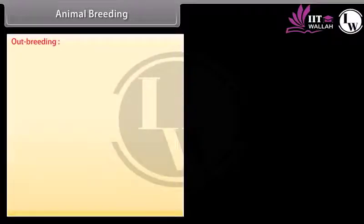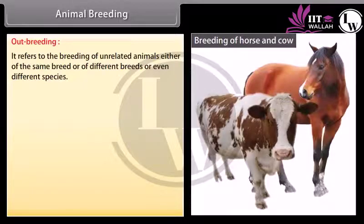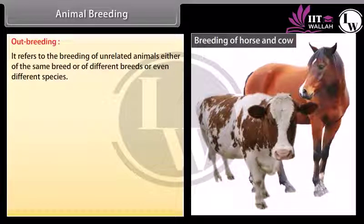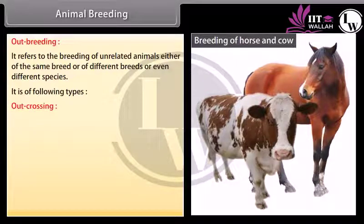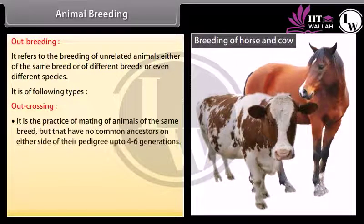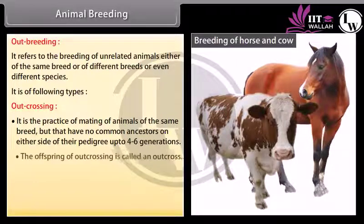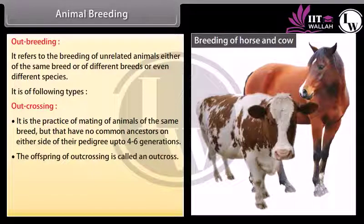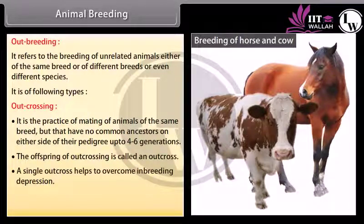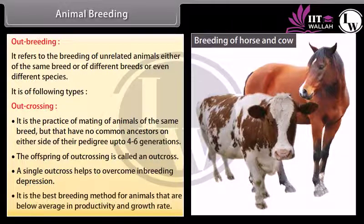Outbreeding refers to the breeding of unrelated animals, either of the same breed, different breeds, or even different species. It is of the following types: Outcrossing is the practice of mating animals of the same breed but having no common ancestors on either side of their pedigree up to 4 to 6 generations. The offspring is called an outcross. A single outcross helps to overcome inbreeding depression and is the best breeding method for animals below average in productivity and growth rate.